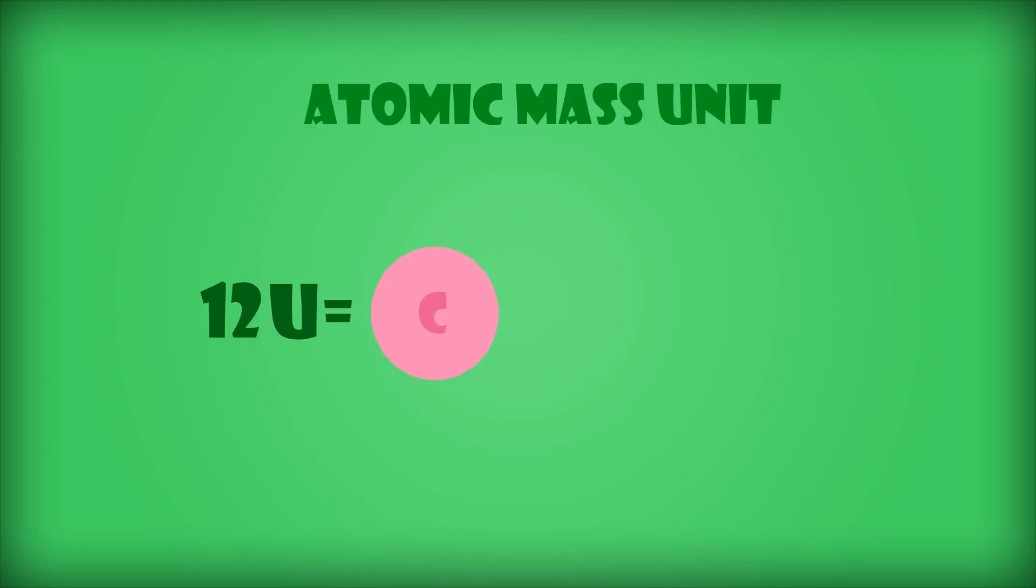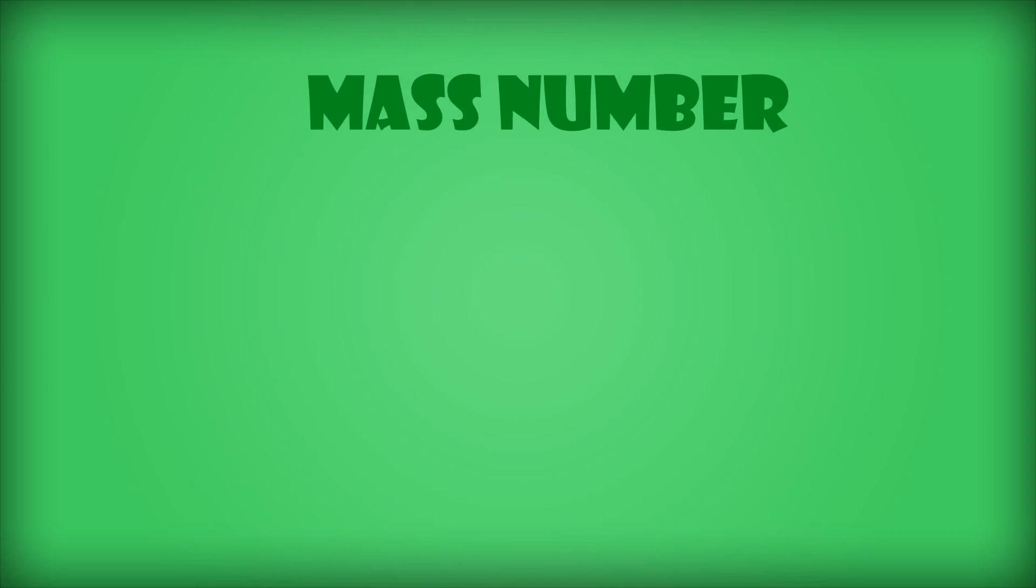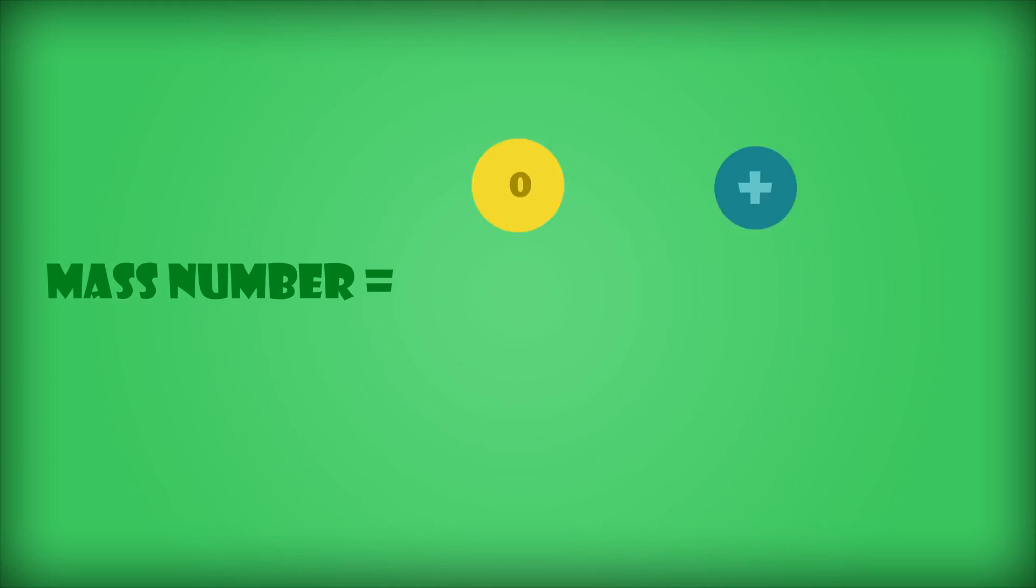Now, we can use this new unit to represent the mass of atoms, which is known as the mass number, and is simply the sum of the number of protons and neutrons in the atom.